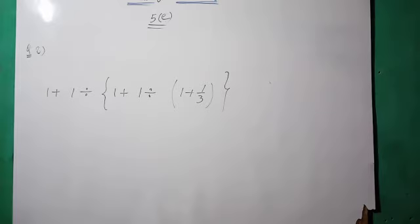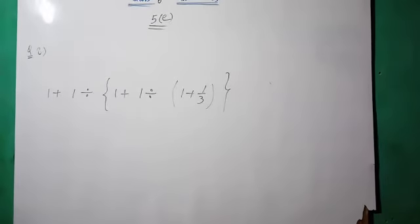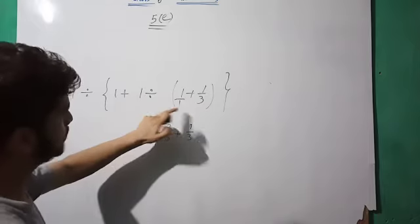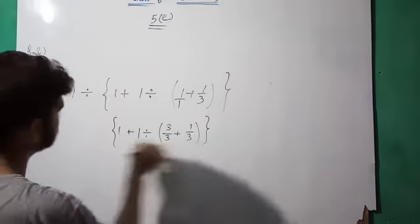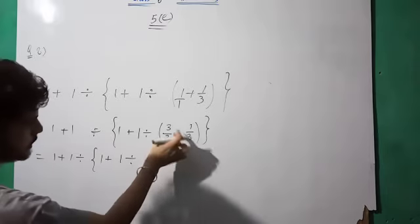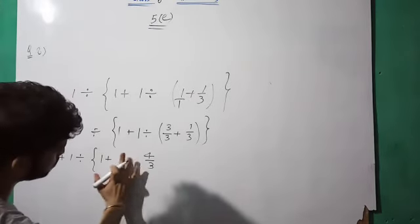Now the last problem, question eight: one plus one divided by bracket, again one plus one divided by bracket, one plus one by three. Starting from the innermost bracket: one plus one by three. One is written as three by three, so three by three plus one by three gives four by three. To reduce steps, multiply directly with three by four.